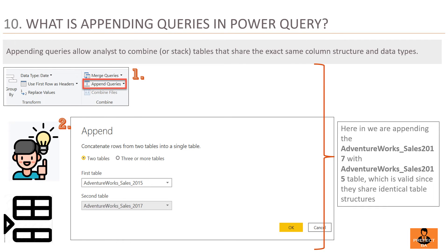Question 10: What is appending queries in Power Query? Appending queries allow analysts to combine or stack tables that share the exact same column structure and data types. In step 1, select Append Queries under the Home ribbon. In step 2, select the tables to be appended from the dialog box. The next screen shows the appended result. Appending adds rows to an existing table. In the example shown, the two tables were appended because they share a common schema — the structure is the same for both tables.